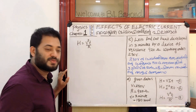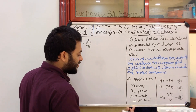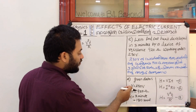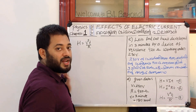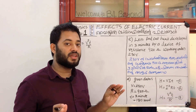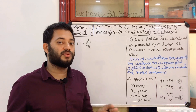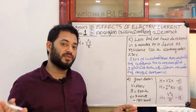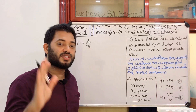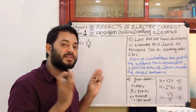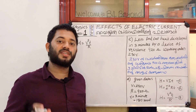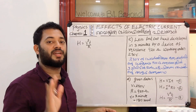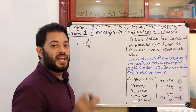Now let's substitute the equation. If we have V squared, we can multiply. H equals V squared T by R — let's substitute the values.